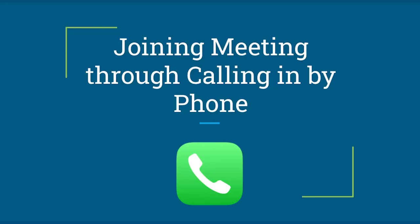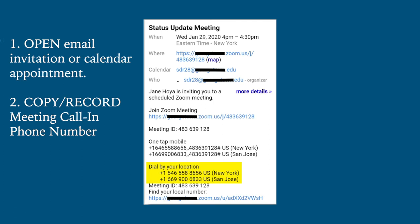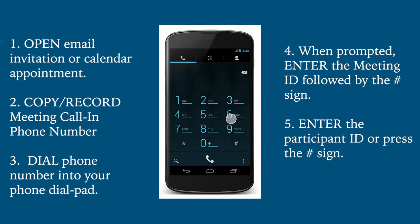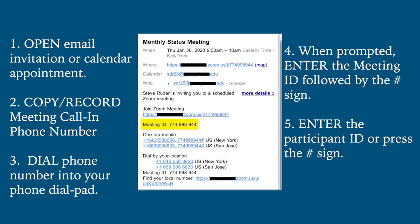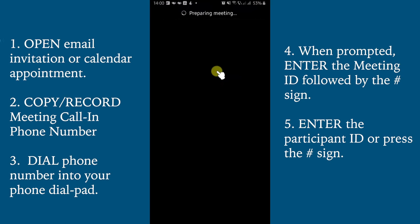We will now be going over how to join a meeting by calling in by phone on an Android device. First, open the email invitation or calendar appointment for the event sent to you by the center. Then copy or record your meeting call-in phone number, highlighted in yellow. Go to your home screen, click on your phone application, and dial the phone number to call into the meeting. When prompted, enter the meeting ID followed by the pound sign. The meeting ID can be found in the same email invitation. At the next prompt, enter the participant ID or just press the pound key. After this, you will be connected to the meeting.